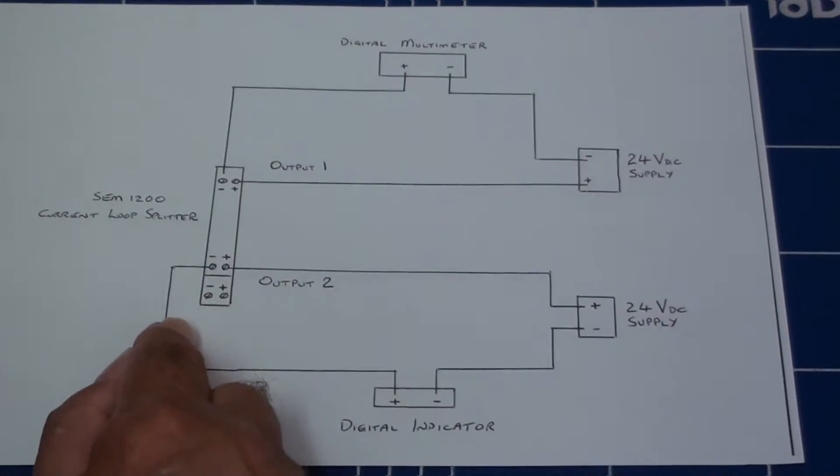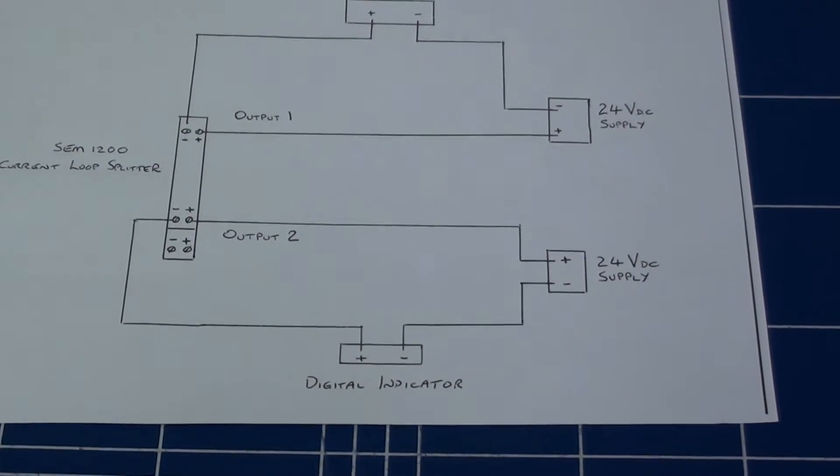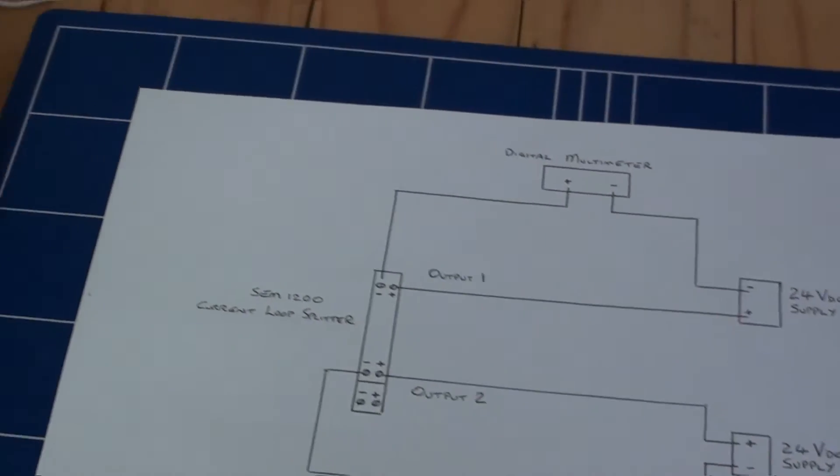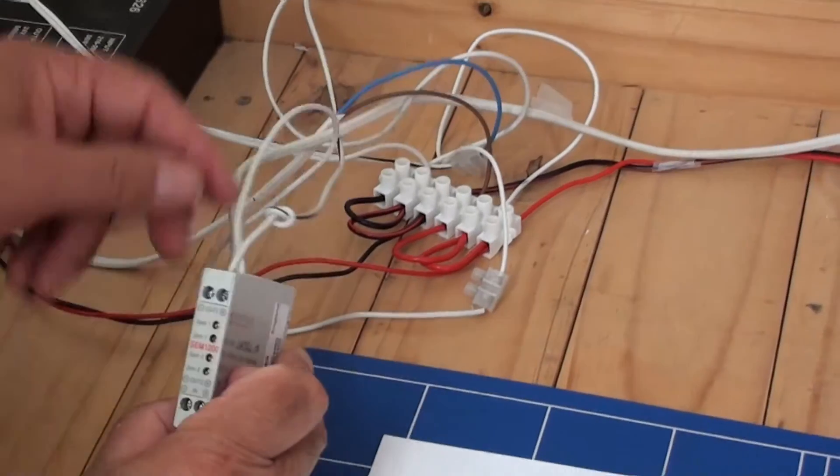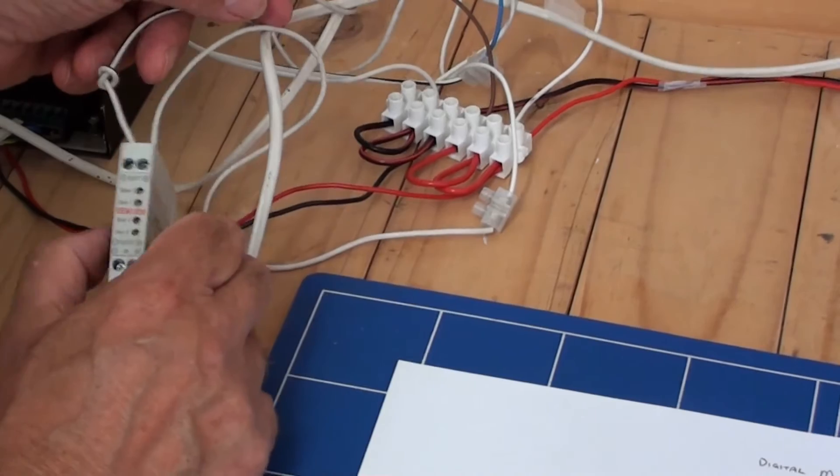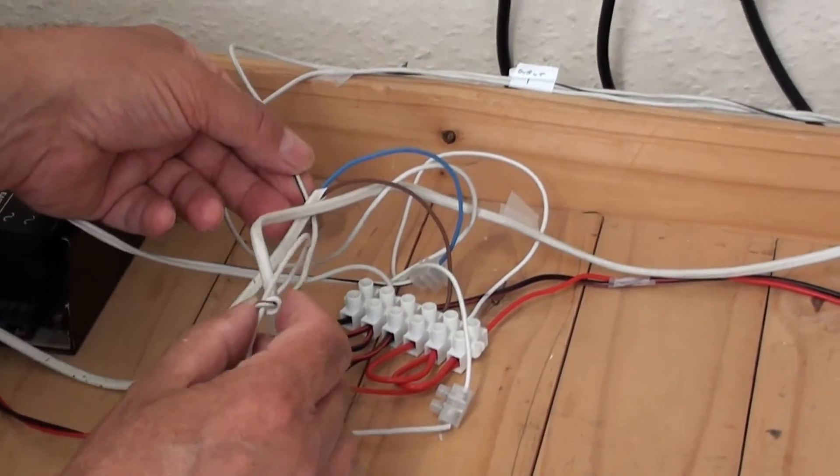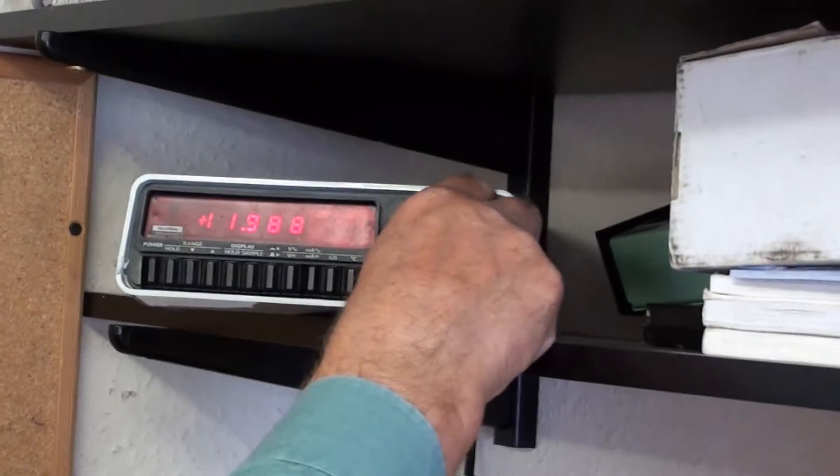Similarly for output 2. Let's follow it through in one of the circuits. Looking at output 1, I've got the negative here connected through. You can see from the black and white wire, follow it through all the way up to the multimeter here to the plus.